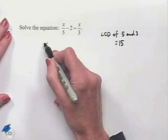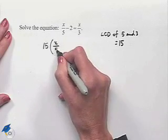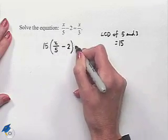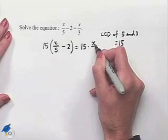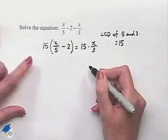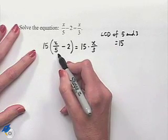We're going to take that value and multiply both sides of the equation by 15. So we're going to have 15 multiplied times x over 5 minus 2 equals 15 multiplied times x over 3. On the left hand side of the equation, we'll perform the distributive property of multiplication over subtraction in order to simplify.